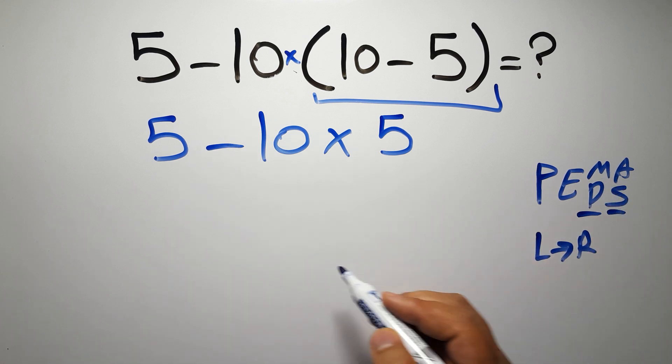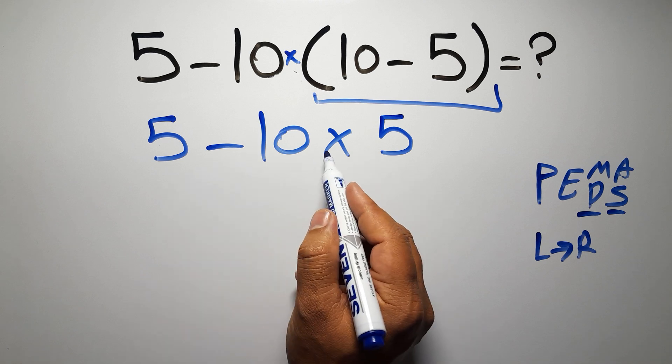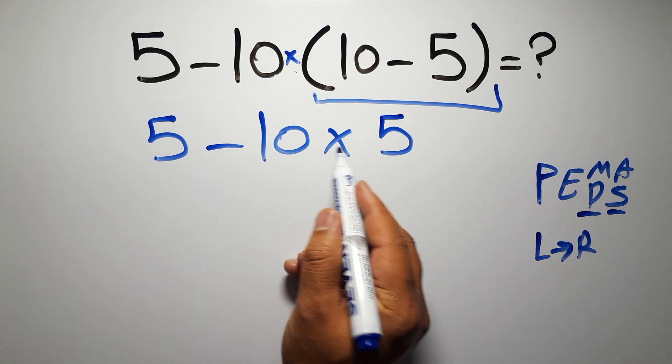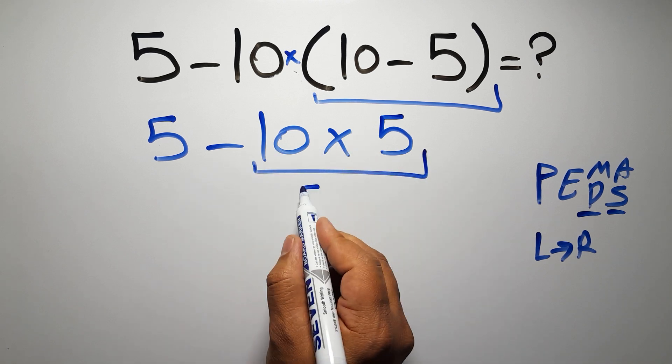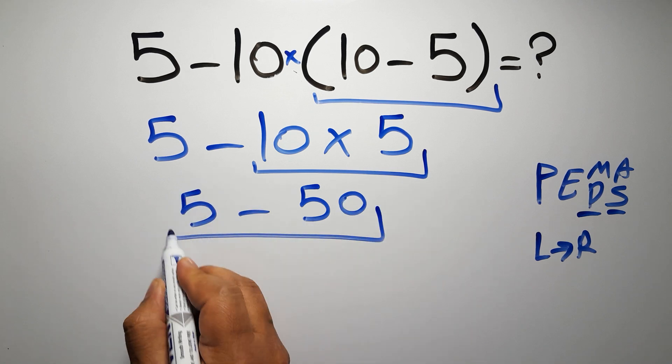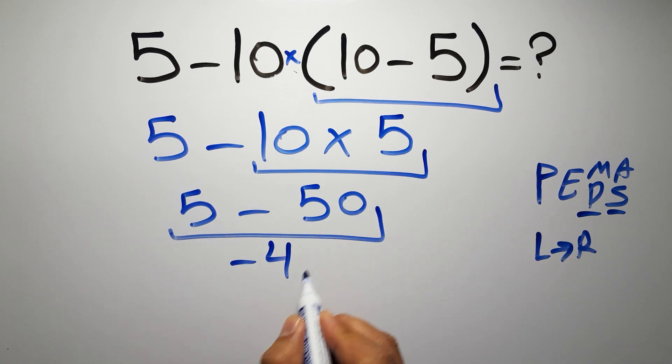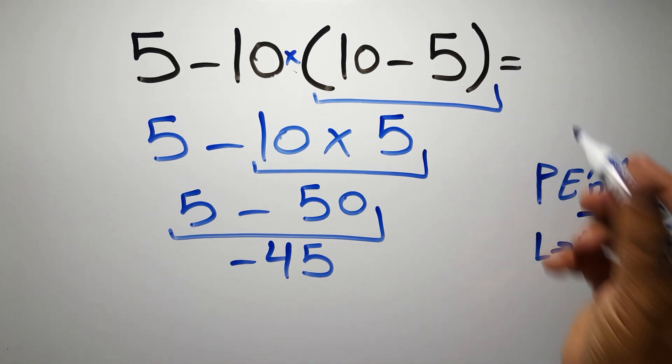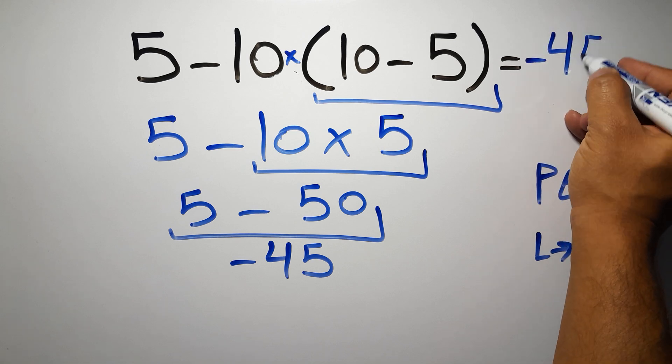Here first we have to do this multiplication: 10 times 5 gives us 50. So 5 minus 50 which equals negative 45, and this is our final answer to this problem. The correct answer is negative 45.